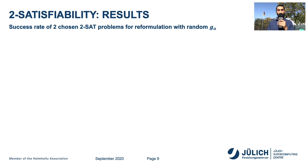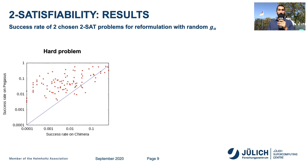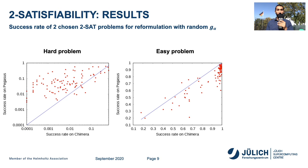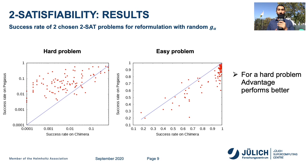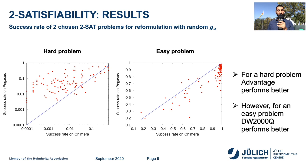Next, we benchmark the success rate of two chosen 2-SAT problems for reformulation such that the scaling factor is random. For the hard problem, Advantage performs better, which can be seen on the left plot where the red points are above the blue line. And for the easy problem, D-Wave 2000Q performs better, which can be seen on the right plot where the red points are below the blue line.